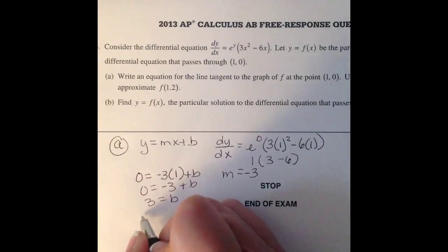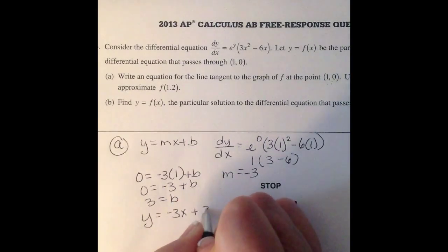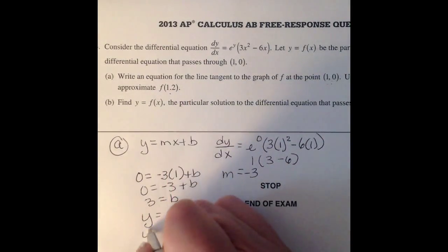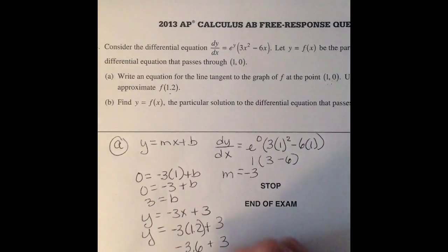And so our equation is y = -3x + 3. And then we want to approximate f(1.2). So we're going to go -3(1.2) + 3, and we are going to get for an answer -0.6.